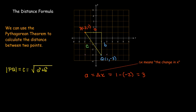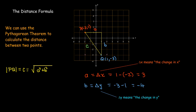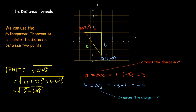For the vertical change, delta y, we take -3 minus 1, which gives -4. It won't matter that it's negative because in the Pythagorean theorem we square these values. So 3 squared is 9, and (-4) squared is 16. Nine plus 16 is 25, and the square root of 25 is 5. So the distance from P to Q is 5 units.